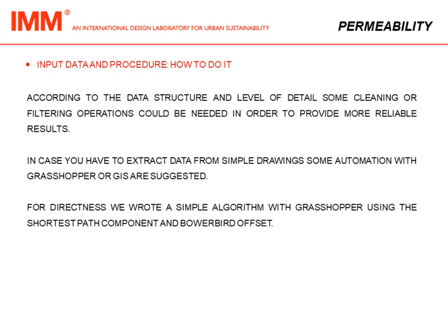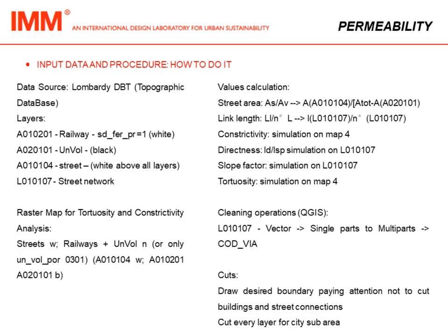For the directness calculation we wrote a simple algorithm in Grasshopper using the shortest path component and Powerboard offset. Here you can find more details about how to do it: the specific layers used from the topographic database to identify the railway, volumetric units of buildings, and streets; how to make the raster map for tortuosity and connectivity analysis; how to calculate some values; and the cleaning operations needed on the layers to perform the analysis correctly.